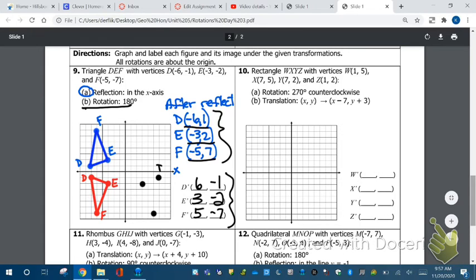D prime is (6, -1). E prime is (3, -2). And F prime is the last one. Connect them, and I am done. That's my favorite part.